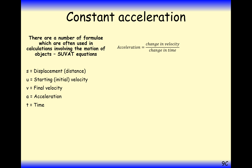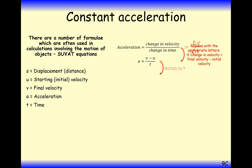Looking at acceleration on our velocity-time graphs, it was the change in velocity divided by the change in time. The change in velocity is effectively the final velocity take away the starting velocity — that's how much it's changed by — divided by time T. And that gives us our first formula, generally written as V equals U plus AT. This is the first of our five SUVAT formulas that link four letters together. Notice how S is not in this formula — each of the five formulas has a missing letter.